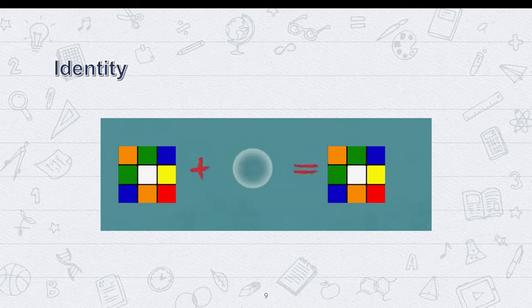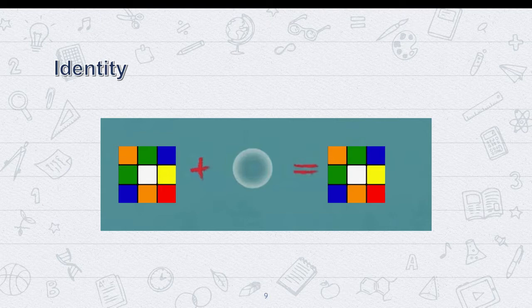For the identity property, there's an element of our group called the identity. When we apply it to any other element in our group, we still get that element. So for both turning the square and adding integers, our identity here is zero.